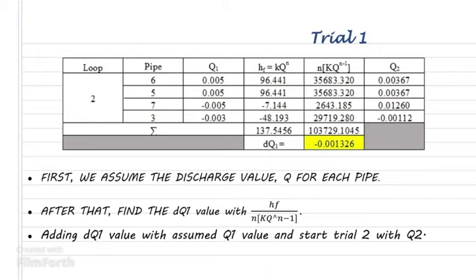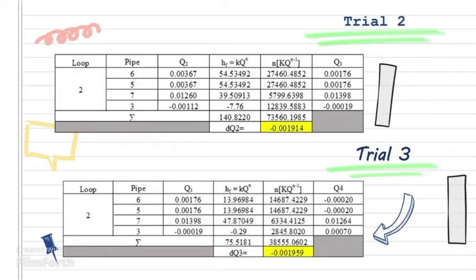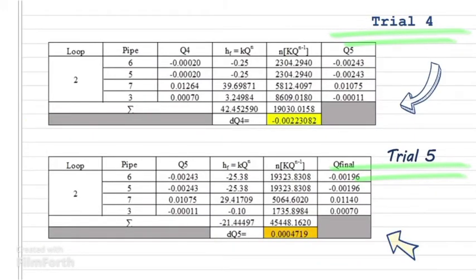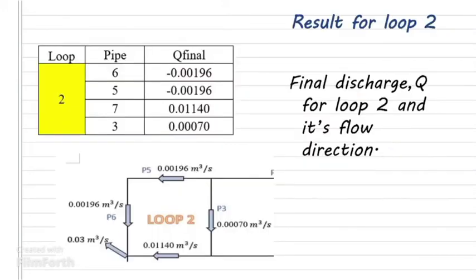For trial 1, we get the dQ1 value is negative 0.001326. For trial 2, we get the dQ2 value is negative 0.001914. For trial 3, we get the dQ3 value is negative 0.001959. For trial 4, we get the dQ4 value negative 0.00223082. And last, for trial 5, we get the dQ5 value 0.004719. After we get the dQ value is 0.000 something, it means that we can stop the trial and we can get our final discharge Q. This is our final discharge Q for loop 2 and we can also know its flow direction.